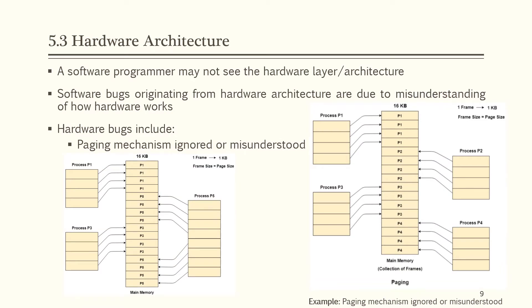Hardware architecture: a software programmer may not see the hardware layer or architecture. Software bugs originating from hardware architecture are due to misunderstanding of how hardware works. Hardware bugs include the paging mechanism being ignored or misunderstood.